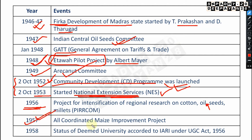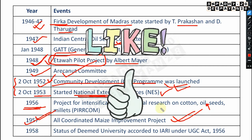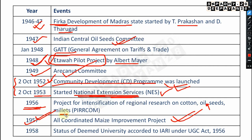In 1957, the All India Coordinated Maize Improvement Project was started. In 1958, the status of deemed university was accorded to IARI under the UGC Act of 1956, making IARI a deemed university.